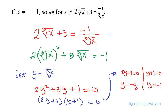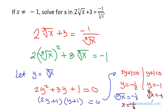Returning to the original variable, cube root of x = -1/2. Raising both sides to the third power gives x = -1/8. For the other solution, cube root of x = -1 gives x = -1. However, we don't use that solution because, according to the problem, x is not equal to negative 1. So our answer is x = -1/8.